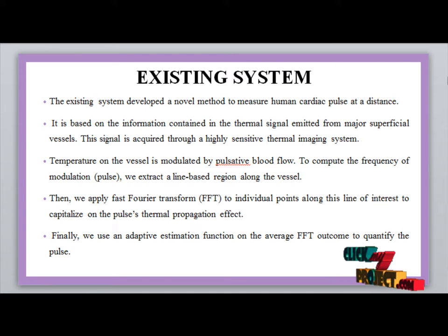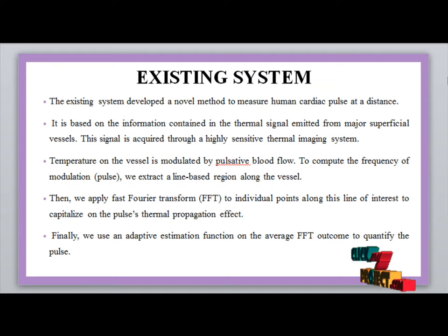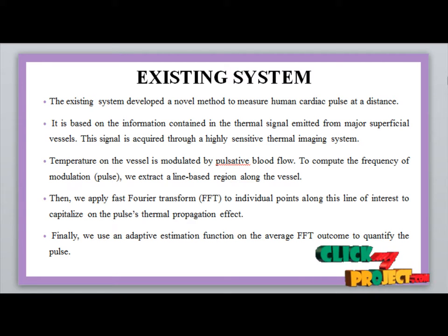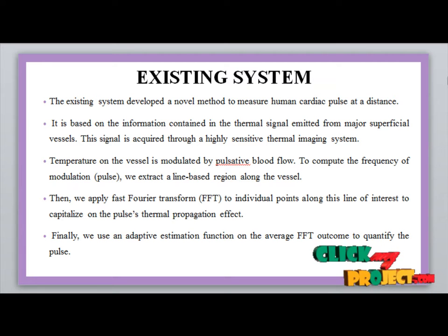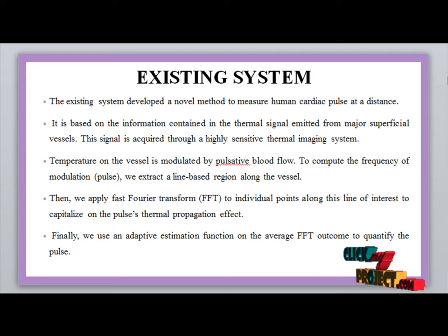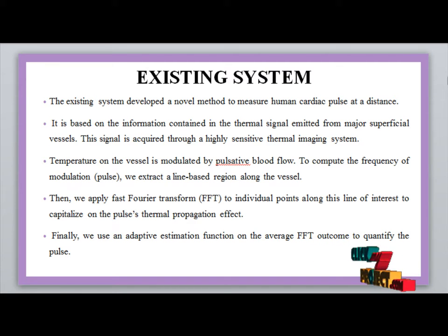The existing method developed a novel approach to measure the human cardiac pulse at a distance. It is based on the thermal signal emitted from major superficial vessels, captured through a highly sensitive thermal imaging system. Temperature on the vessels is modulated by pulsatile blood flow. To compute the frequency of modulation, we extract a line-based region along the vessel, then apply the phase transform to individual points along the line of interest to capture the pulse thermal propagation effect. Finally, an adaptive estimation function is applied to the average FFT outcome to quantify the pulse.